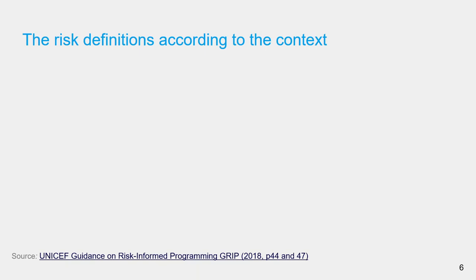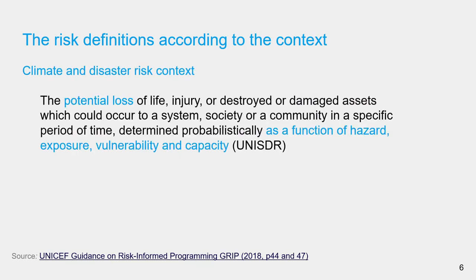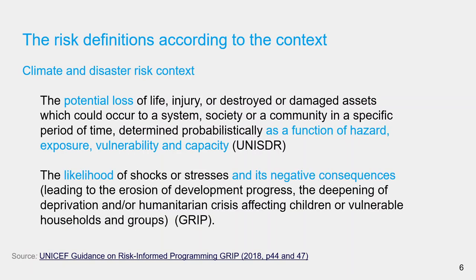For example, let's look at the domain of climate and disaster risk. UNISDR defines risk as the potential loss of life, injury, or destroyed or damaged assets which could occur to a system, society, or a community in a specific period of time, determined probabilistically as a function of hazard, exposure, vulnerability, and capacity. The UNICEF's guidance document on risk-informed programming, known as GRIP, defines risk as follows.